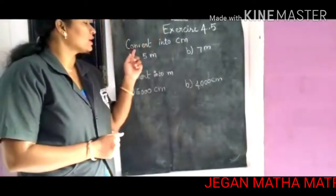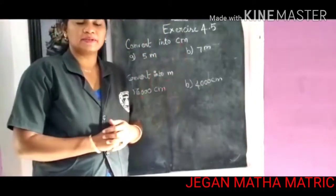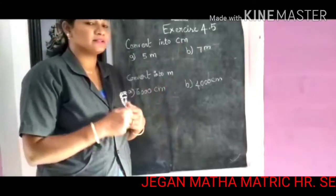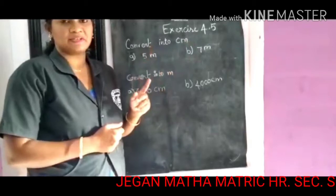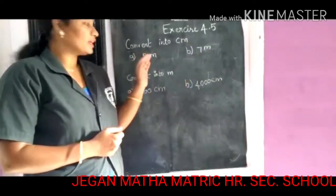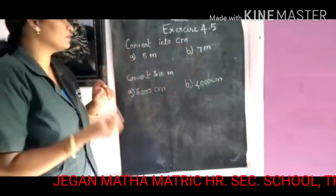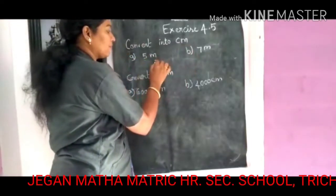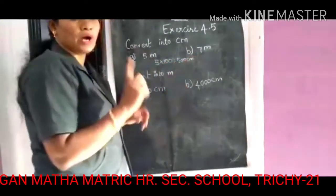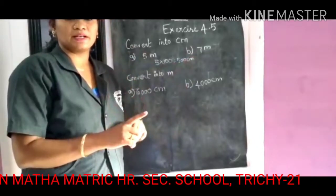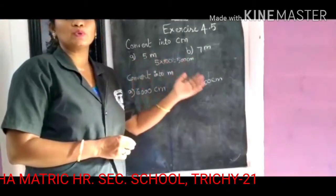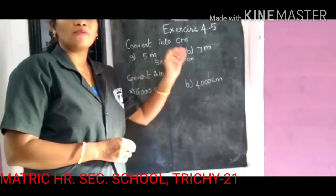First one: convert into centimeter. In the previous section you have learned to convert to centimeter and convert to meter. Once again recall the things. To convert into centimeter, the first question: you want to convert 5 meter to centimeter. Meter to centimeter, you want to multiply by 100. So 5 meter multiplied by 100 equals 500 centimeter. You know, 1 meter equals 100 centimeter. So 5 meter equals 500 centimeter.